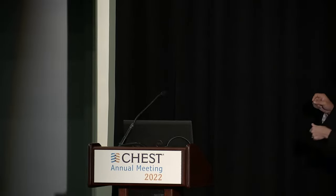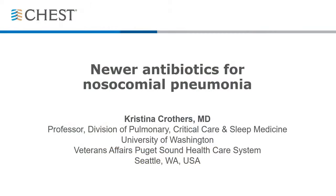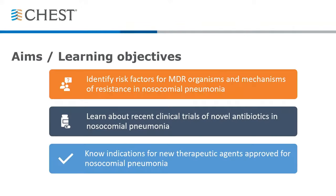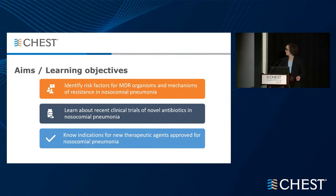We move on to Dr. Christina Crothers, who is faculty at the University of Washington and the VA site as well. She has no conflicts of interest to disclose. The objectives are to identify risk factors for MDR organisms and mechanisms of resistance, review data on recent clinical trials of novel antibiotics, and discuss indications for new therapeutic agents in nosocomial pneumonia.